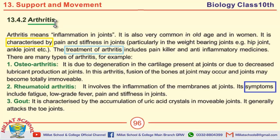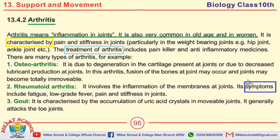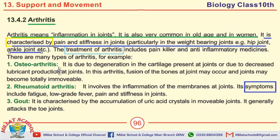The last topic is arthritis, which is one of the disorders of the skeletal system. Define arthritis: arthritis means inflammation in joints. It is also very common in old age and in women. The symptoms of arthritis: arthritis is characterized by pain and stiffness in joints, particularly in the weight-bearing joints, for example the hip joint and ankle joint.